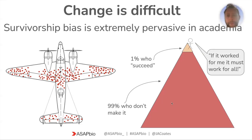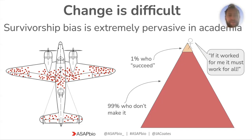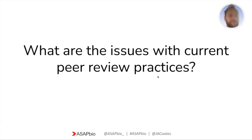This makes change incredibly difficult, and when we're talking about peer review it is even more of an issue. We've all had papers go through peer review that improved the paper, but I'm going to talk about why peer review actually doesn't work at all in its current form — despite the fact that it does improve individual papers, which might seem contradictory. So what are the issues with current practices in peer review?